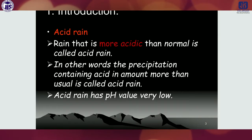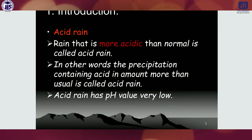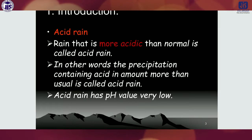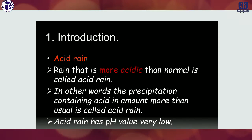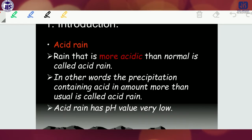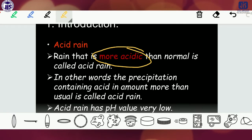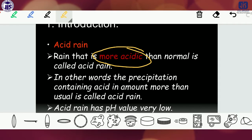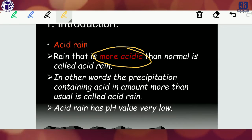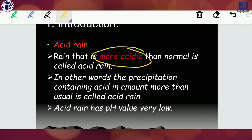Acid rain is the most important part of air pollution, and it is very dangerous — it gradually creates several kinds of problems in our environment. So first of all, what is acid rain? Acid rain is rain that is more acidic than normal water. We can understand whether rain is acidic or not by the pH. In other words, the precipitation containing acid in an amount more than usual is called acid rain.